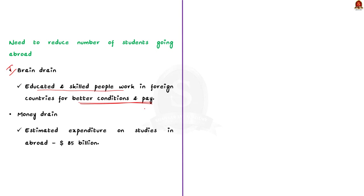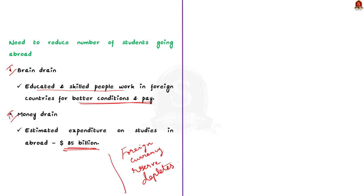According to a report, as many as 1.8 million students are estimated to spend about 85 billion dollars on education abroad by 2024, which leads to money drain and will have an impact on the foreign currency reserves of our country. So these are the two reasons why we need to improve education facilities in India to reduce the number of students going abroad.